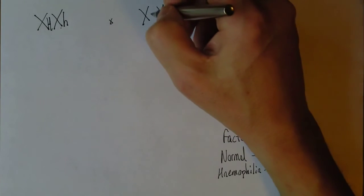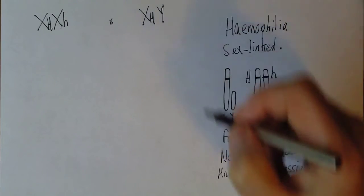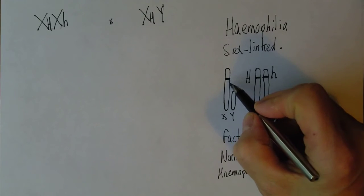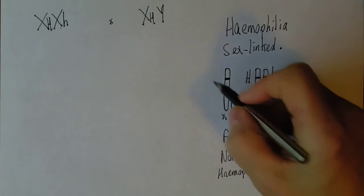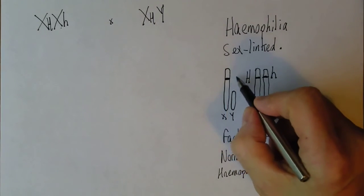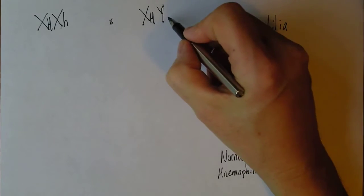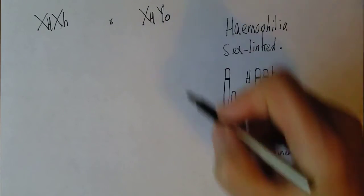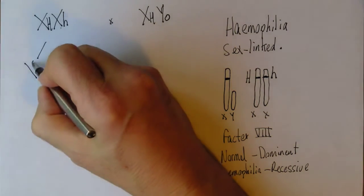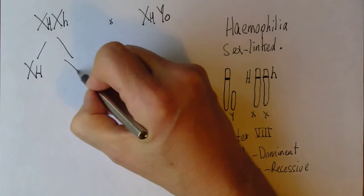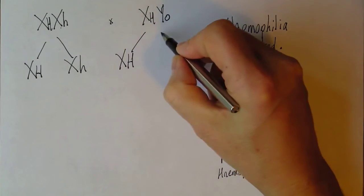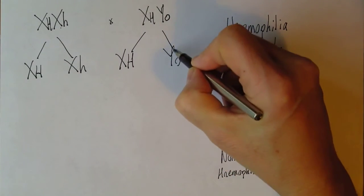Suppose she marries a normal man. He'll have X(H) because he's normal — he only has one gene for producing Factor 8, but thankfully he doesn't have haemophilia because one gene is more than enough. On the Y chromosome there is no homologous position, so the Y chromosome carries zero — it's not carrying anything.